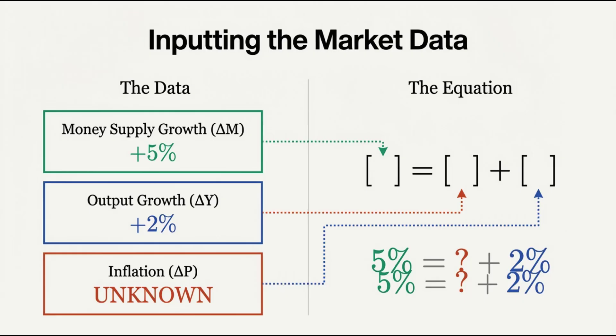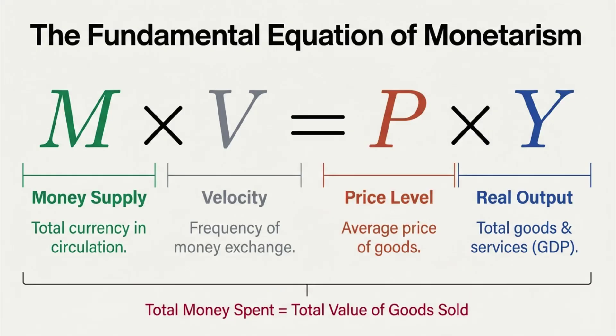Our puzzle isn't about the total amount of money. It's about the growth in money, right? It's all in percentages. So we can't just use that base formula as is. We need a version that looks at the change in each of these variables over time.